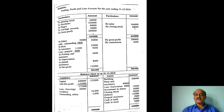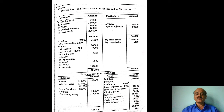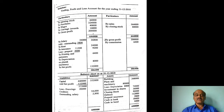Closing stock Rs. 80,000 is on the credit side. The credit side total is Rs. 6,44,000. The gross profit is the balancing figure, transferred to profit and loss account as gross profit brought down.